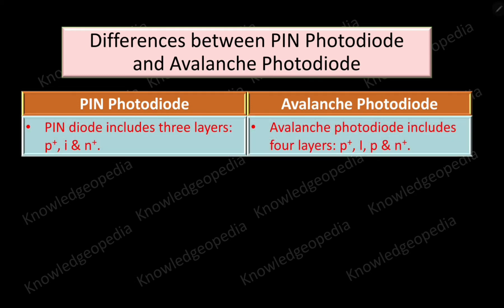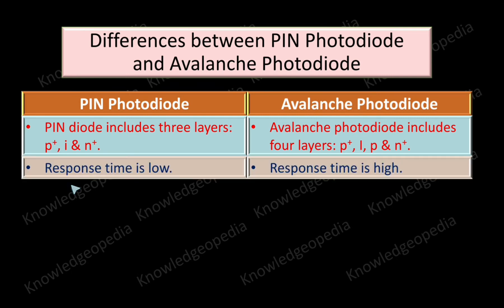In case of a PIN photodiode there are three layers: one is the P+ region, one is the intrinsic region, and the third one is the N+ region. But in case of avalanche photodiode there is an extra layer which is P-type in nature, sandwiched between the intrinsic region and N+ region. So there are four layers in case of avalanche photodiode: P+, intrinsic, P, and N+.